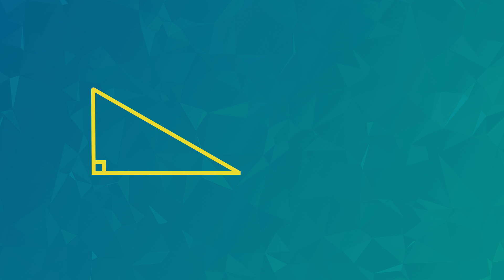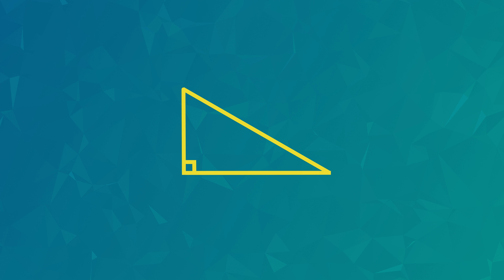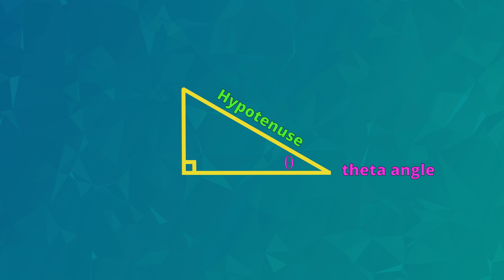But before I show you the three trigonometry rules, let's see the important parts of a right-angled triangle. Here is the right angle — it's 90 degrees. Opposite the right angle is the longer side of the triangle that we call the hypotenuse. This angle is marked with the Greek symbol theta. Theta is the Greek letter T and is used to mark the angle. Opposite the angle marked theta is the opposite side, and right next to the theta angle is the adjacent side.